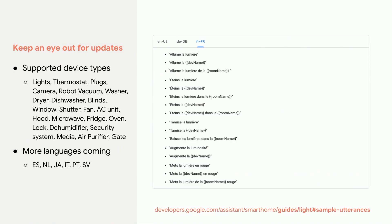We're actively working on expanding to six additional languages. Not only are we documenting these, but we are also adding explicit regression testing on each one of these queries that we document to ensure that we identify and resolve any issues before your users see them. Go check out the documentation today and see the sample queries on the device type reference pages.